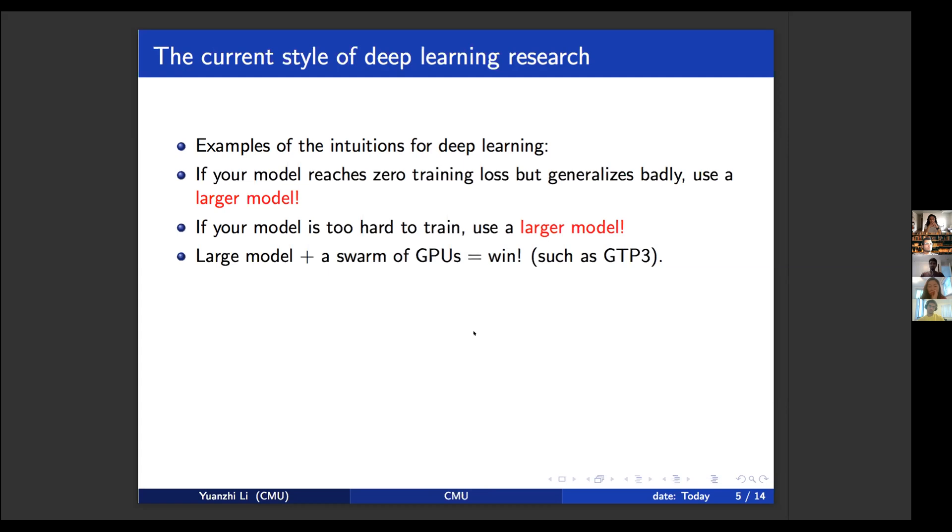For example, large model and you have a swarm of GPUs, then you win the game for deep learning, such as GPT-3. And you also collect some intuition. For example, adding noise in the training always helps, but you shouldn't add too much noise. The scale is really important.